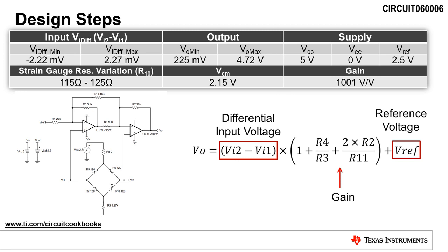The first design goal for this circuit is to output a voltage from 225 millivolts to 4.72 volts for a differential input voltage from minus 2.22 millivolts to plus 2.27 millivolts. The differential input voltage corresponds to a change in the strain gauge resistance of 115 ohms to 125 ohms.